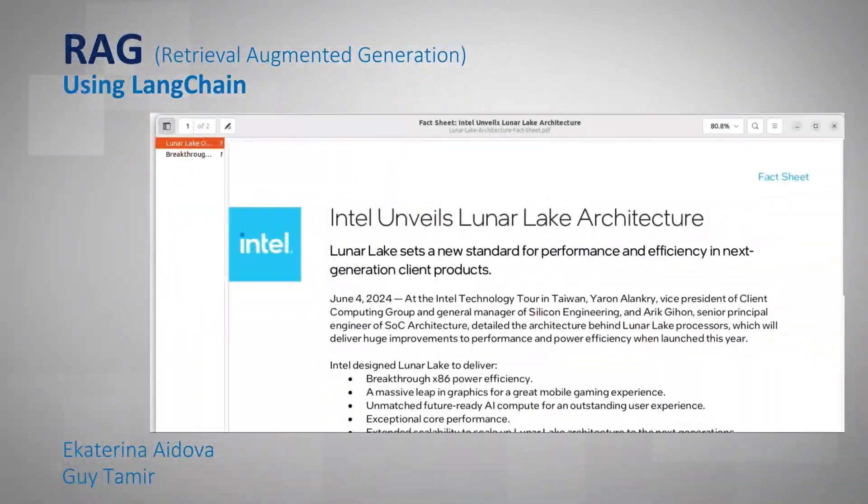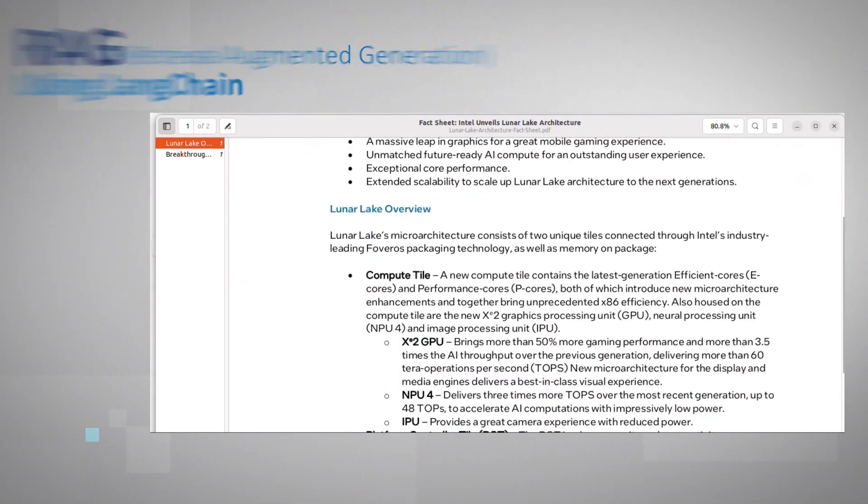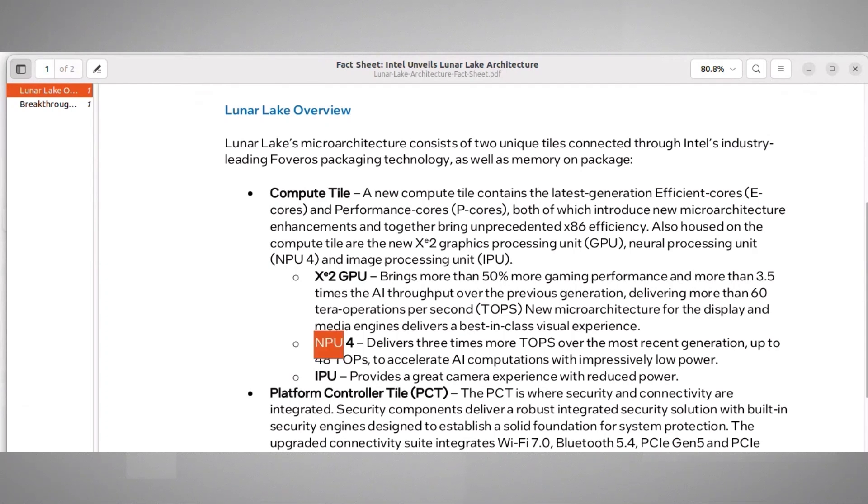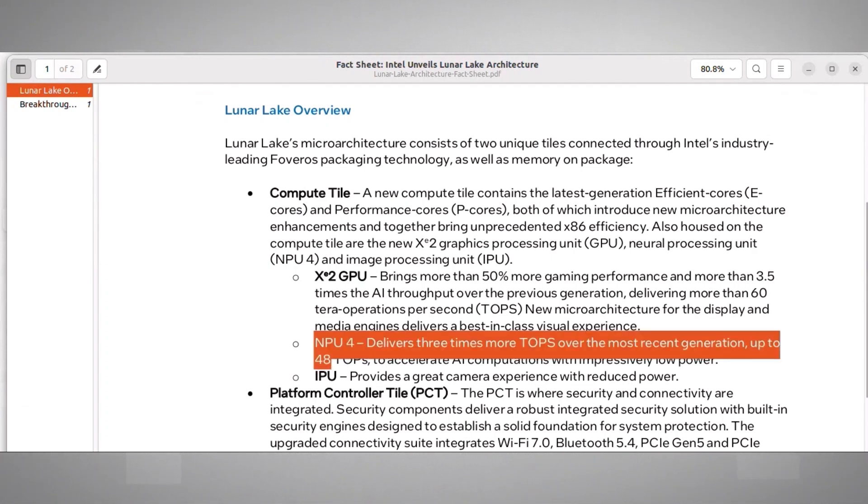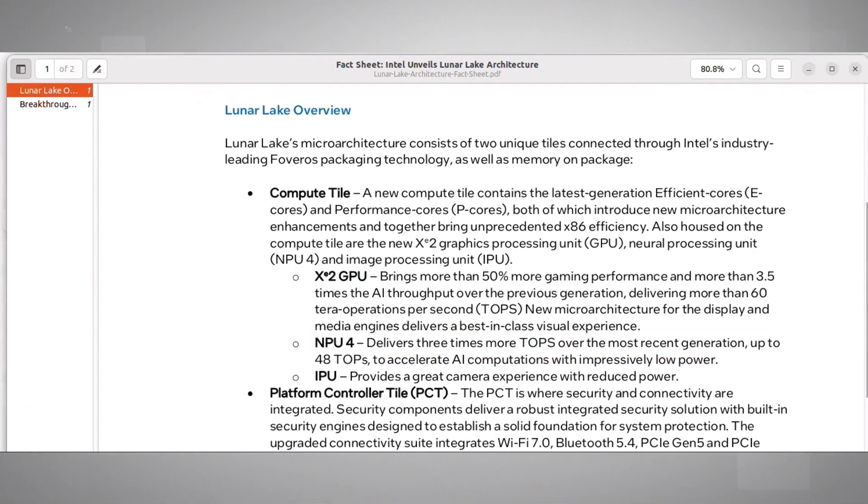I found this interesting document describing Lunar Lake Intel Next CPU. Lunar Lake will have a new NPU that can perform up to 48 TOPs.